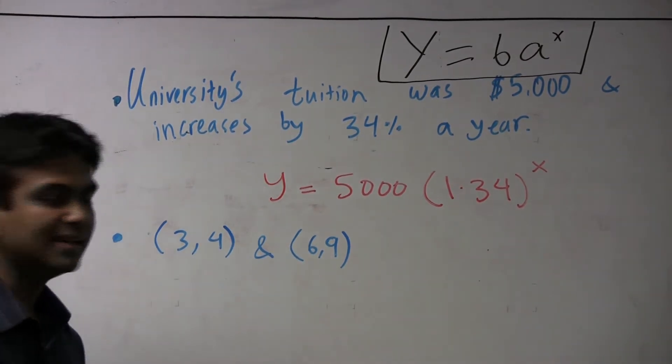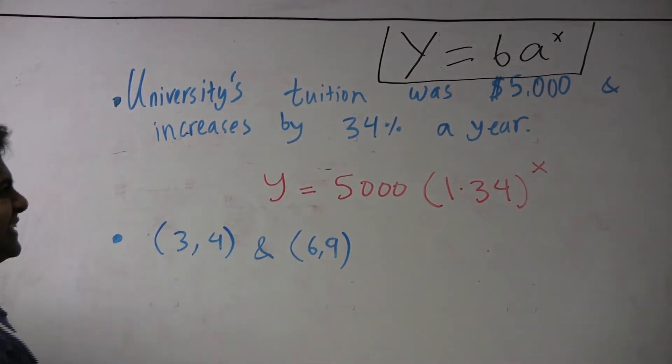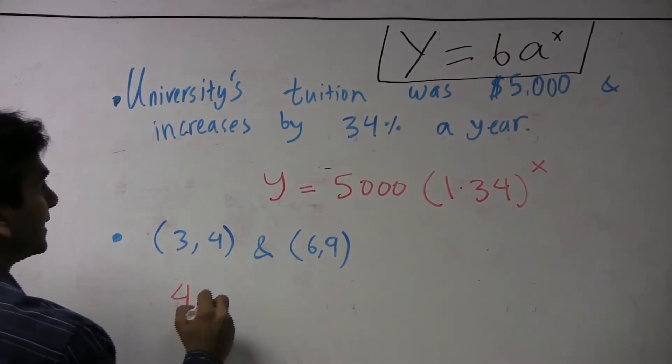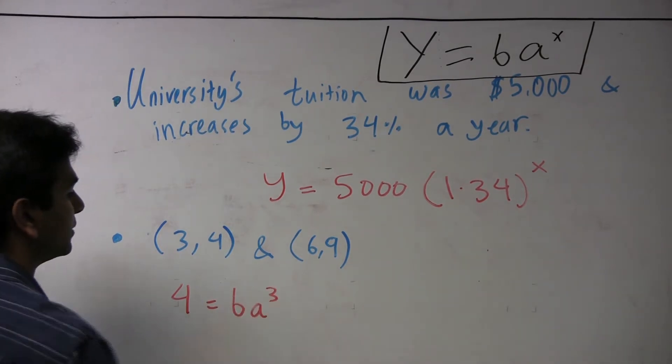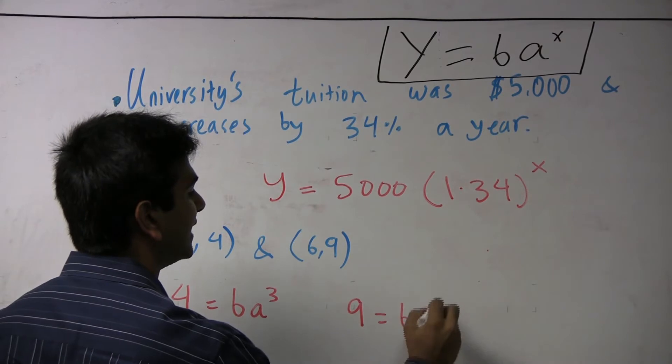So the trick to these is to plug them into this. So if we plug in 3, 4 into y equals bA to the x, then we get 4 equals bA cubed. And this one gives us 9 equals bA to the 6th power.